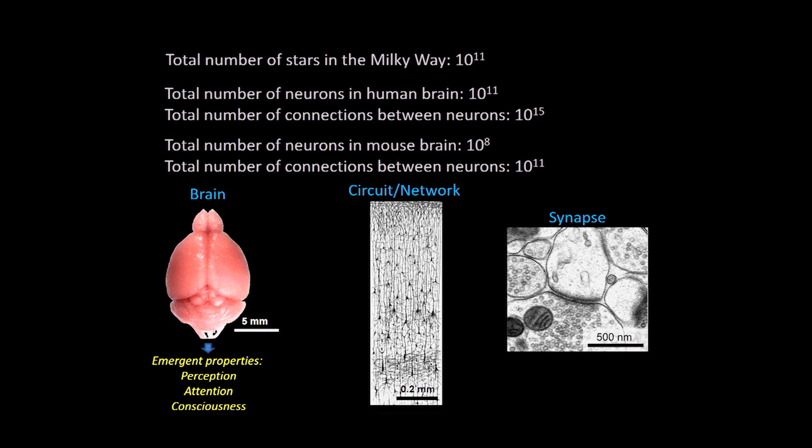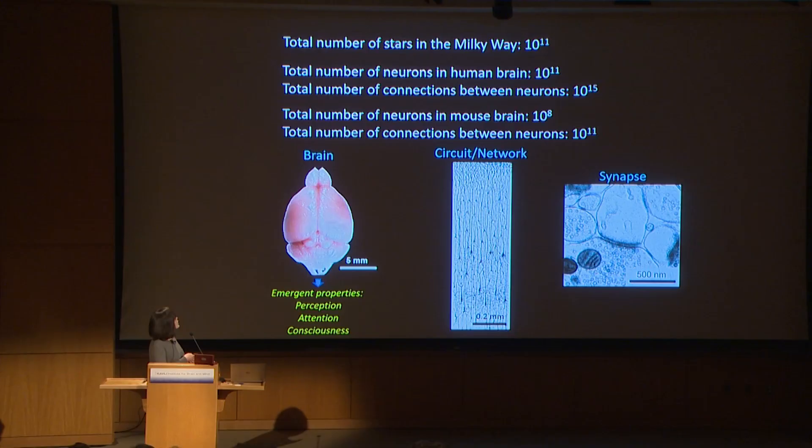These neurons form a neural circuit by connecting with each other through what we call synapses. So it's not enough to only try to understand 100 neurons, even though you can already learn a lot about the universe by looking at 100 stars at different stages. So let's condense all this into scientific questions that we can ask.